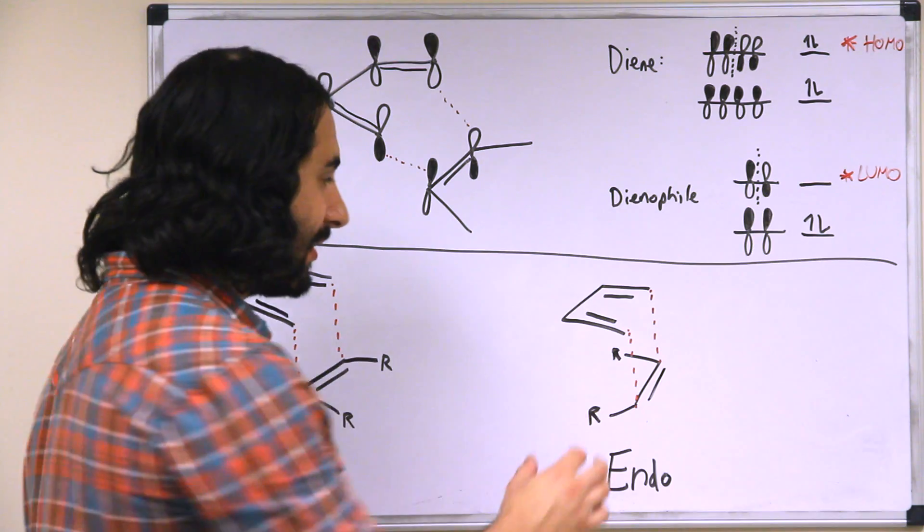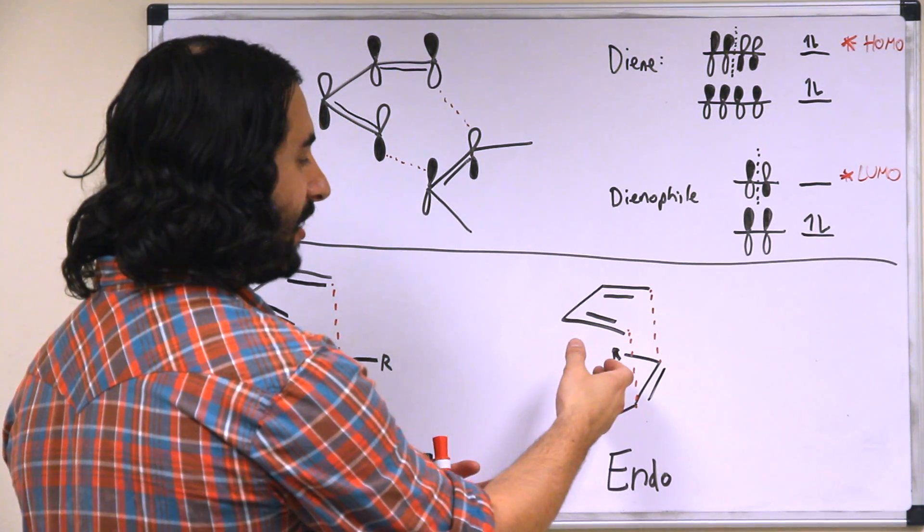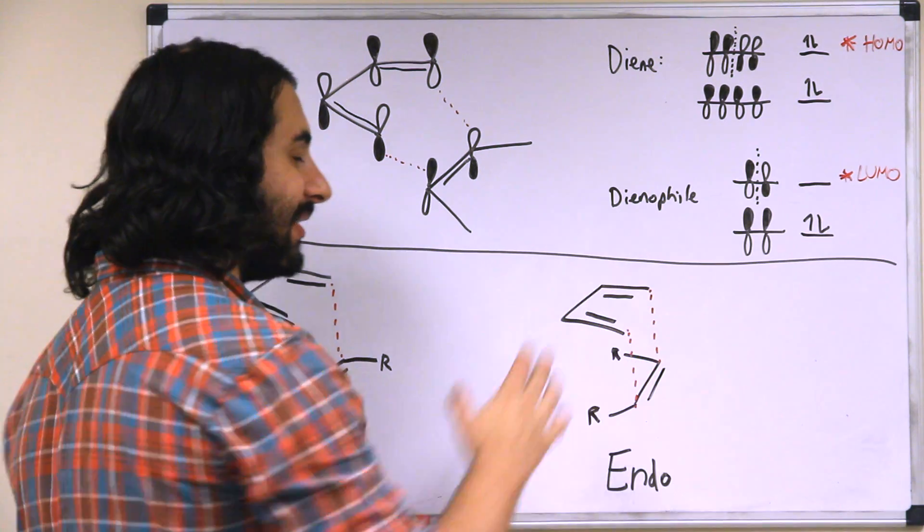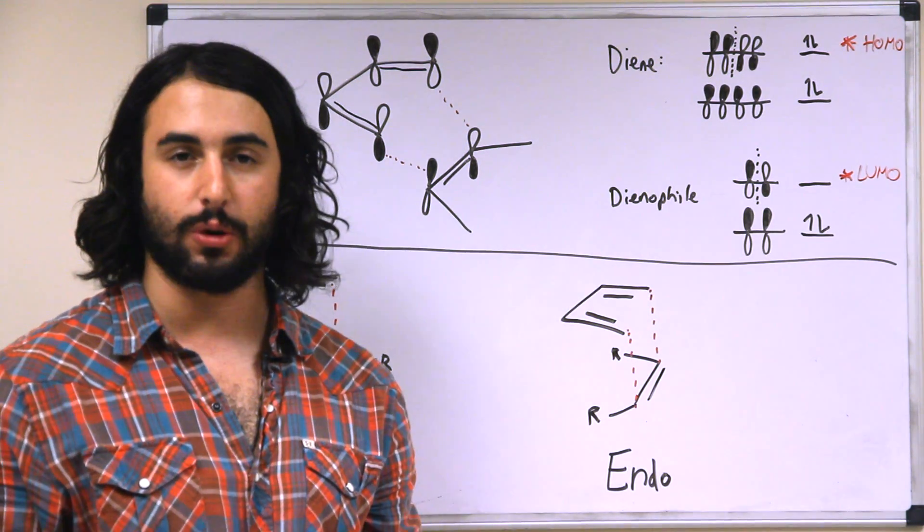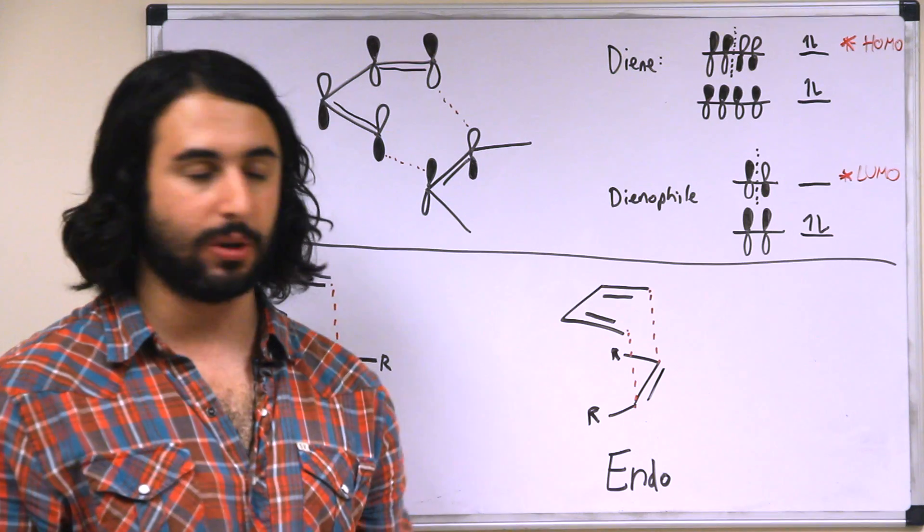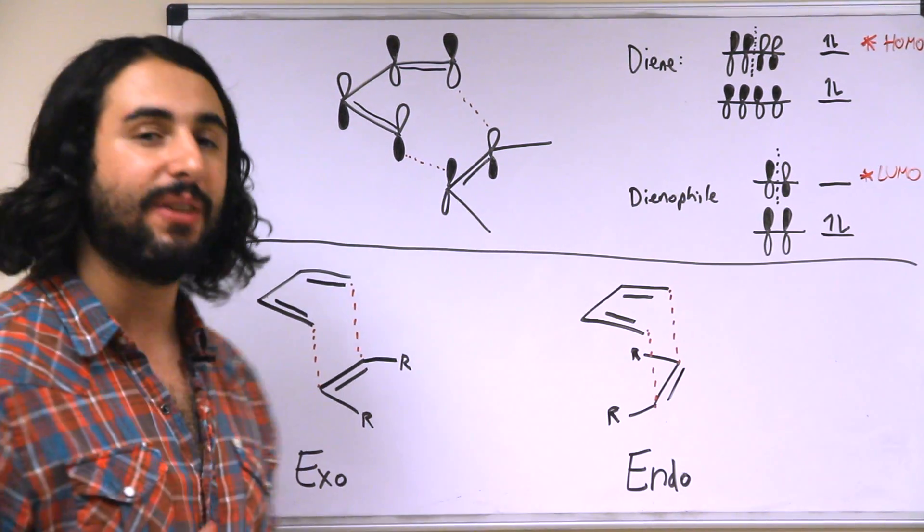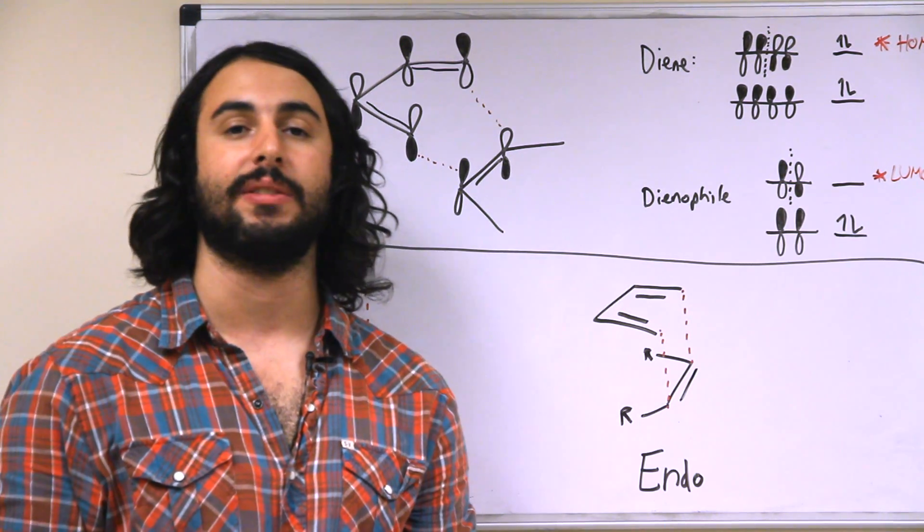Or a slight stabilizing effect between maybe some electron deficient groups where the pi electrons can interact with those groups in the transition state of the molecule. So depending on what's going on, exo or endo may be favored for varying kinetic or thermodynamic reasons.